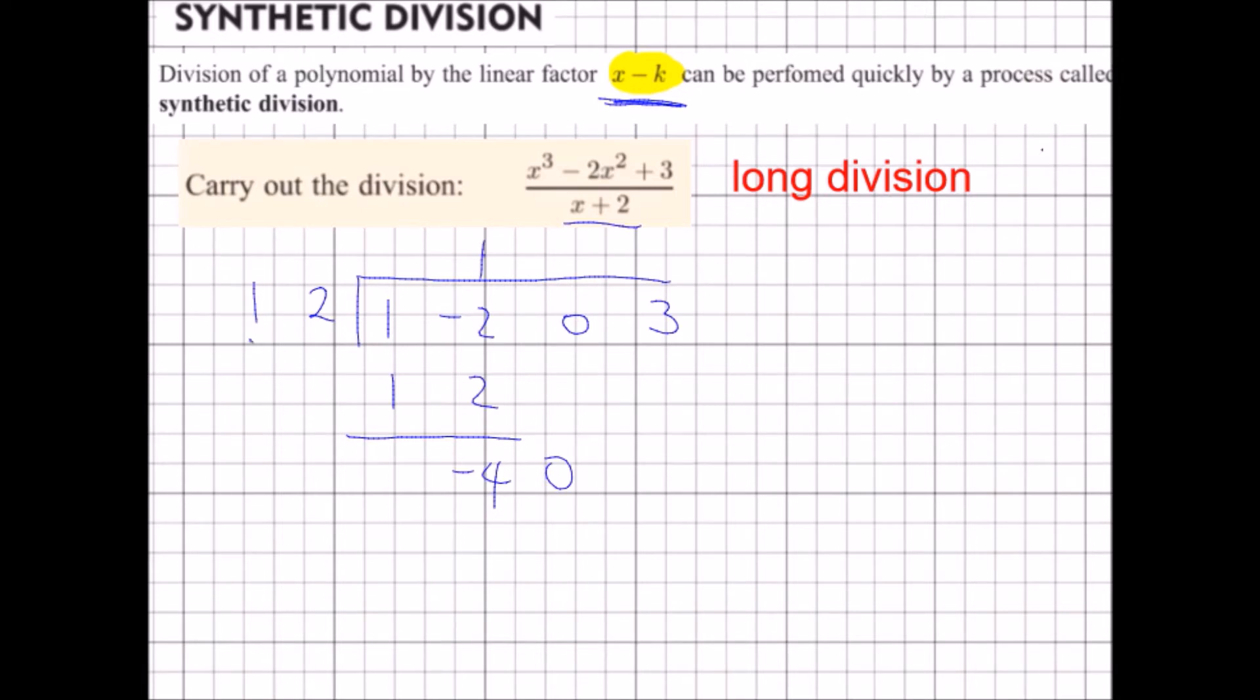Bring the 0 down, now multiply by negative 4, and I get negative 4, negative 8. Subtract, I get plus 8.